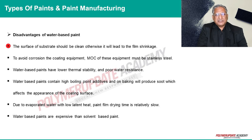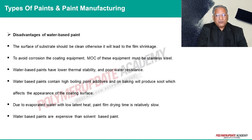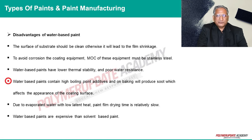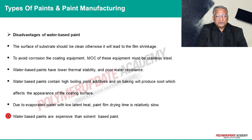Disadvantages of water-based paints: the substrate surface must be clean, otherwise it leads to film shrinkage. To avoid corrosion of coating equipment, the material of construction must be stainless steel. Water-based paints have lower thermal stability and poor water resistance. They contain high boiling point additives and on baking produce soot, affecting the appearance. Due to the low latent heat of evaporated water, paint film drying time is relatively slow. Water-based paints are also more expensive than solvent-based paints.